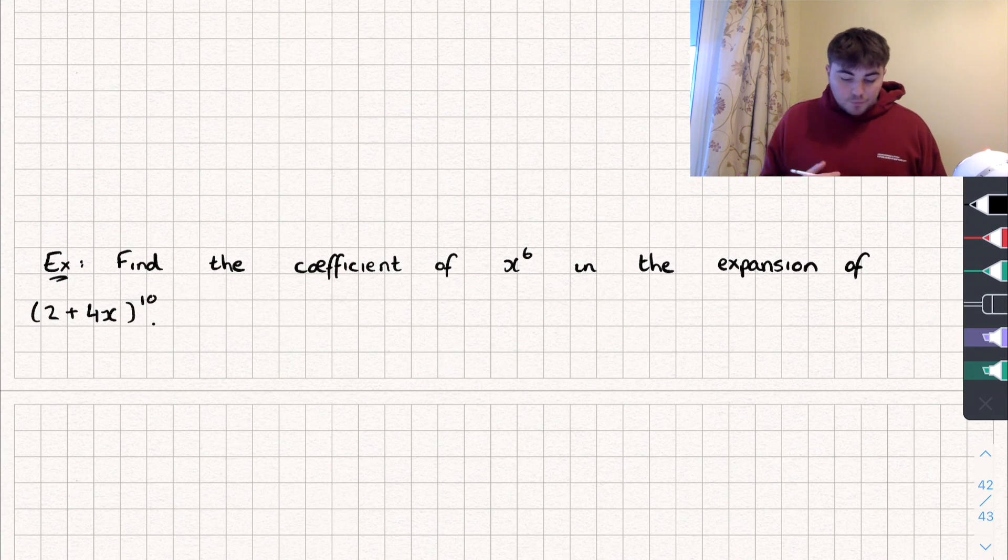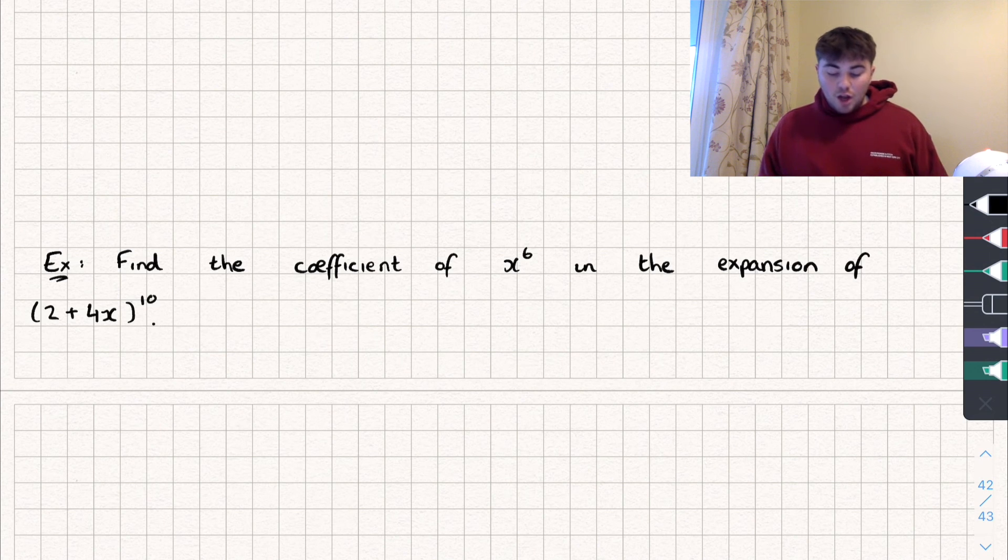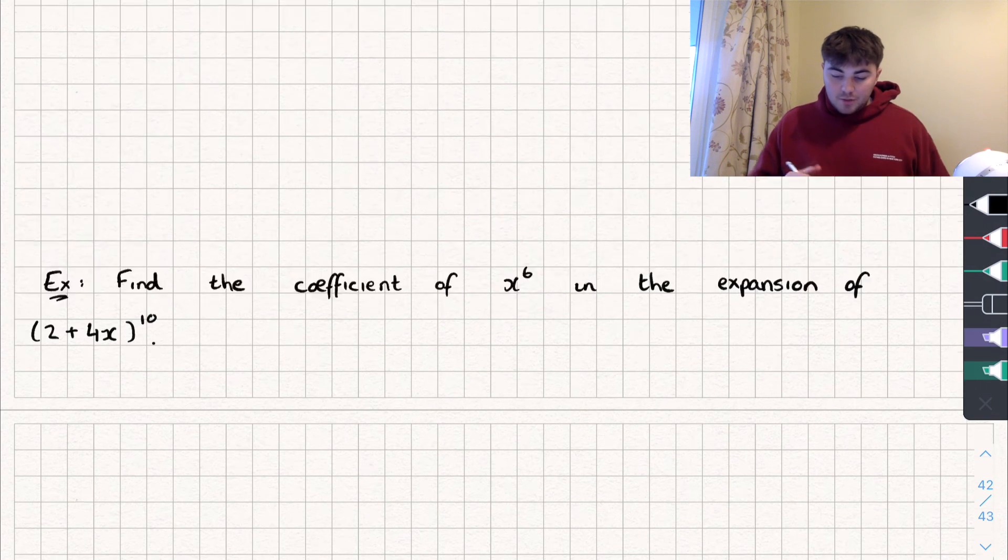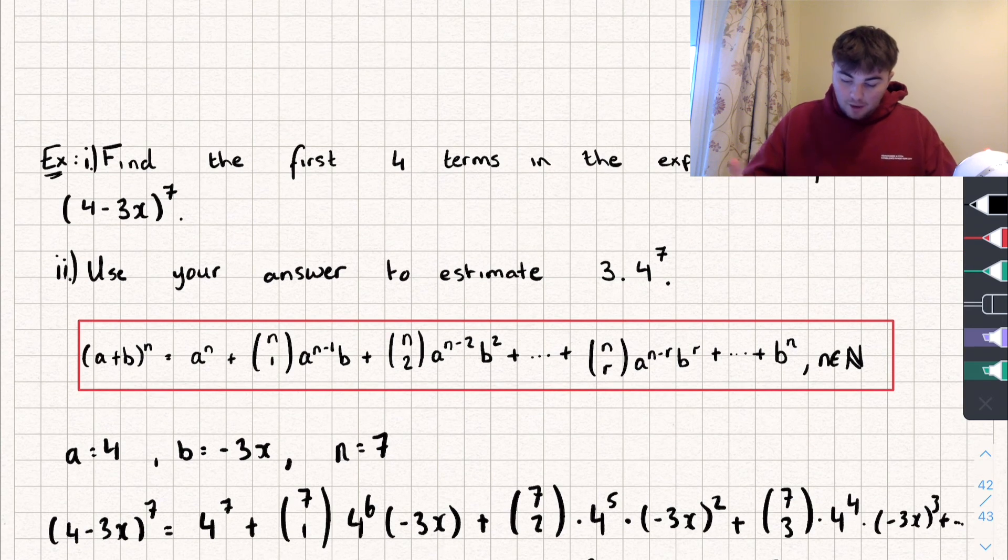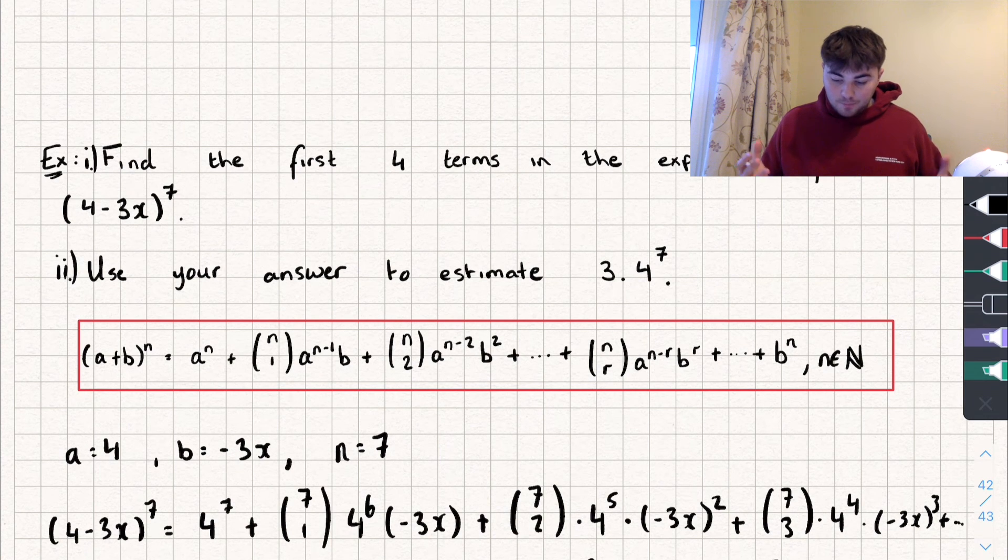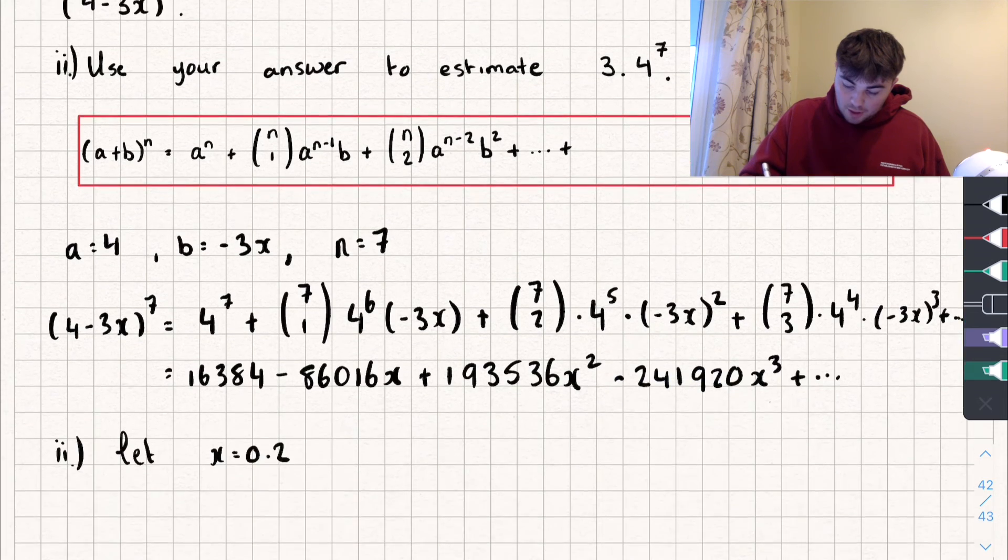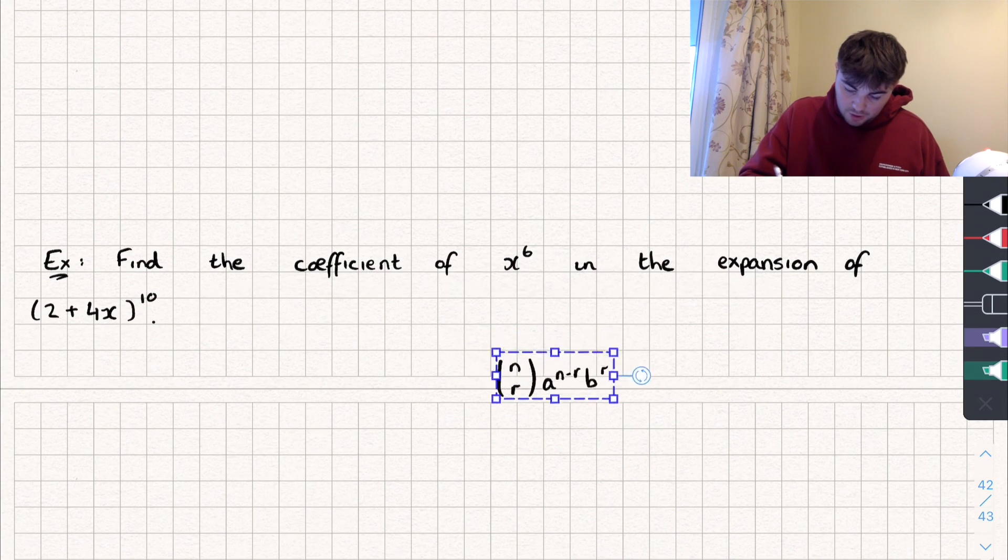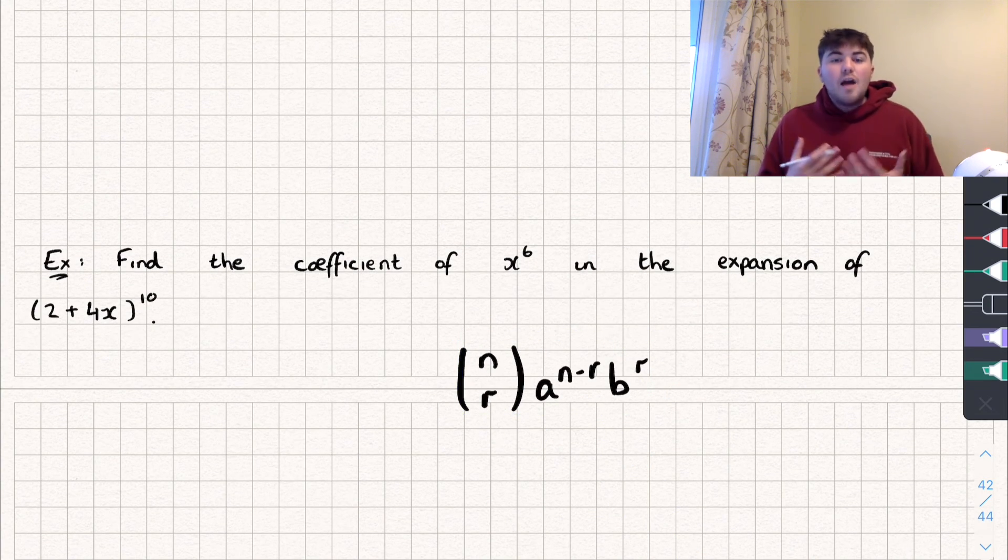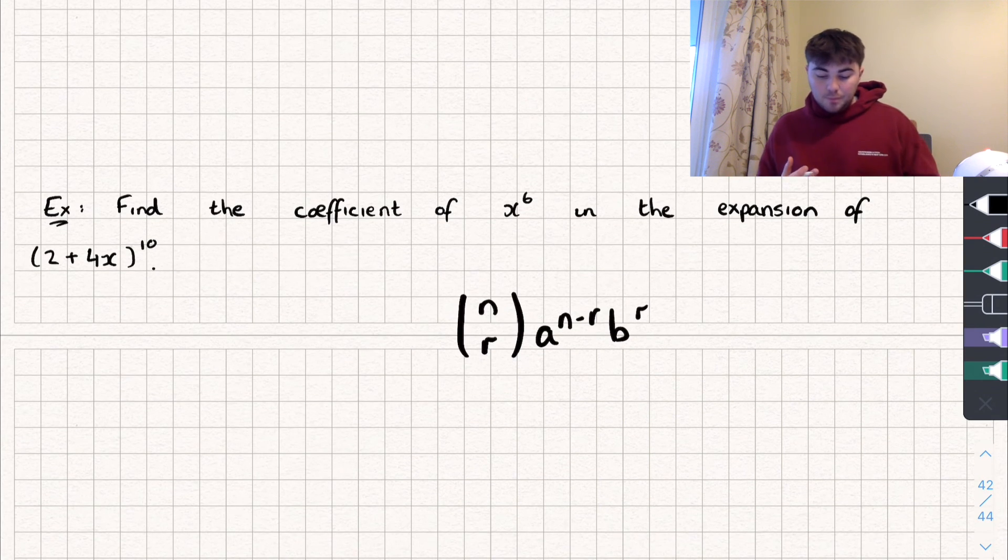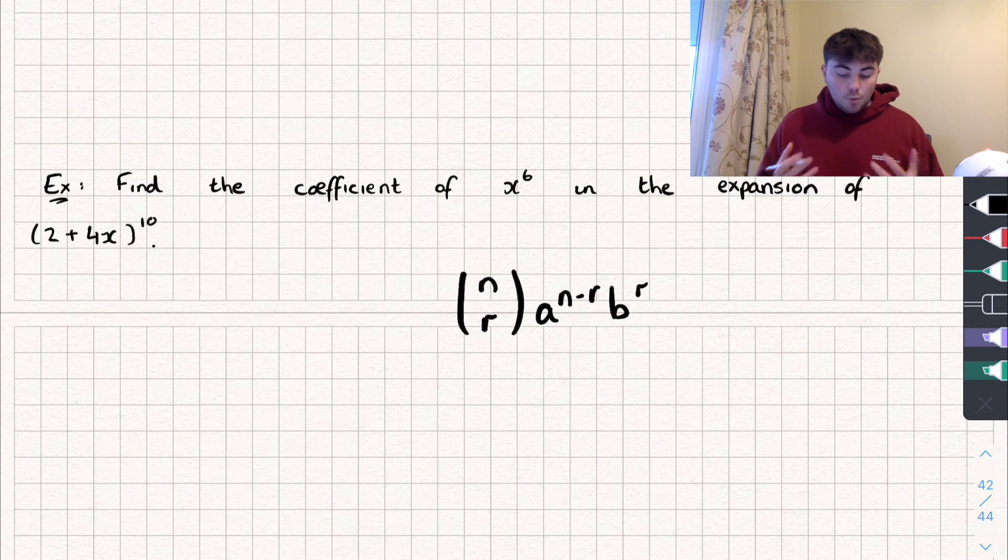The final question I'm going to look at says find the coefficient of x to the power of 6 in the expansion of 2 plus 4x all to the power of 10. And so the way we're going to do this, if I go back up to the formula we have, or the expansion thing, then you can see here we have this generic term, and I'm actually going to bring this down here. This generic term here can be used to find whatever term we want in the expansion. And the way it works is, well, let's first say what we know.